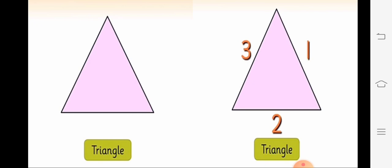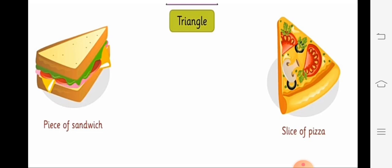And our next shape is triangle. Students, triangle kaisa dikhta hai aapko? Triangle has three sides. Triangle ki kitne sides hote hain? Three — one, two and three. Here, example of triangle: piece of sandwich. Aapne sandwich ka piece dekha hoga — kaisa shape ka hota hai? Triangle ka shape hota hai. And the next one is slice of pizza — uska shape bhi triangle hota hai.